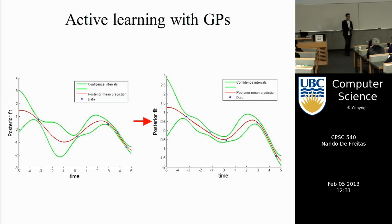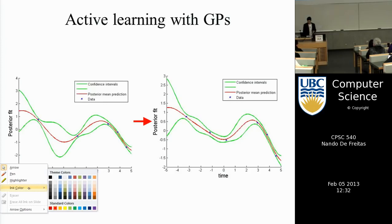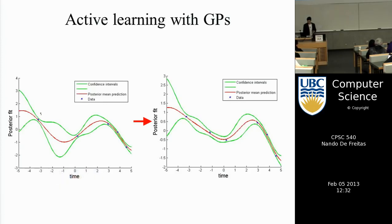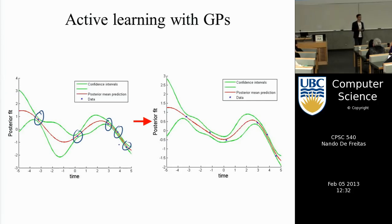Doing predictions on a test set simply amounted to conditioning. A very basic operation of Gaussians is all you need in order to do nonlinear regression. If you have just a few data points — in this case only five — despite very little data, we're able to come up with a fit that seems very plausible. Not only do we get a nonlinear fit, but we also get good confidence intervals for that dataset.